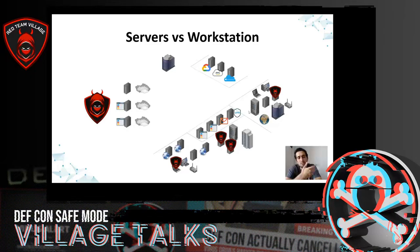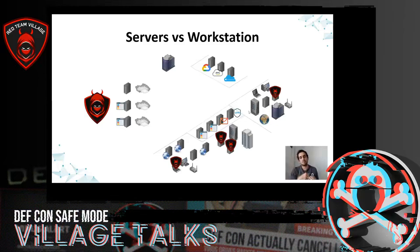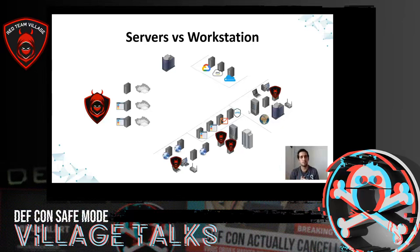The detection capability of the blue team is generally less for workstations. To gain persistence on an internal system, a reverse connection is usually established against a system owned by the red team — for example, a VPS owned by the attacker. It's really simple, essentially like setting a reverse SSH tunnel to map different ports of the internal machine where we deploy persistence.